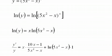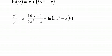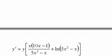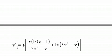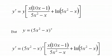And we can simplify this a little bit. For one thing, I can bring the x up here, and I can just get rid of the 1 there. I can also bring the y up. I can multiply both sides by y, and I end up with y prime equals y times this expression. Now, we know what y is. But y is 5x squared minus x to the x power. So I can substitute that in for y right there.